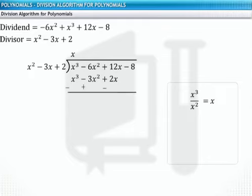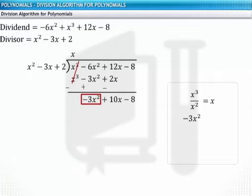The remainder is minus 3x square plus 10x minus 8. Now this remainder is our new dividend. The divisor is the same. To get the second term of the quotient, divide the first term, minus 3x square of the new dividend, by the first term, x square, of the divisor. So we get minus 3 as the second term of the quotient.